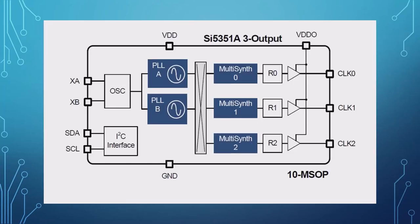Here's the block diagram of the SI5351. You can see XA and XB where the crystal comes in — it uses that to drive the oscillator, and the phase locked loops go through to provide your clock signal. You program it through the I2C interface, and the multi-synth generates a signal at whatever frequency you want and outputs it on clock zero, one, or two. It's a very simple package and very easy to program.